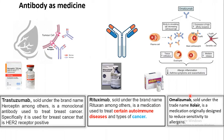Not only trastuzumab — there are other antibodies used as therapeutics as well. For example, rituximab is used for several types of cancer and autoimmune diseases. Another is omalizumab, which is an anti-inflammatory molecule that binds to the Fc region of IgE antibody and prevents IgE from binding to mast cells and degranulating, thereby protecting the body from hyperactive inflammatory responses.